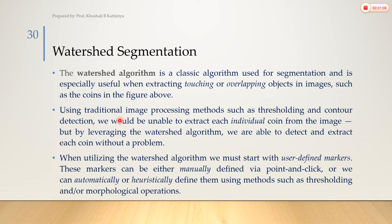Using traditional image processing methods such as thresholding and contour detection, we would be unable to extract each individual coin from the image. But by leveraging the watershed algorithm, we are able to detect and extract each and every coin without a problem.